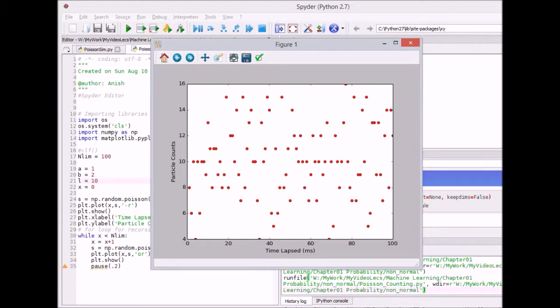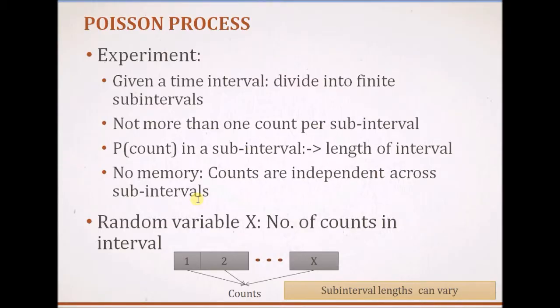To summarize, the Poisson process has three properties: first, there is very little chance of more than one count per sub-interval; second, the probability of each event per sub-interval — for example, the emission of one particle — is proportional to the length of that interval; and third, the probability of the count in each sub-interval is independent of the probabilities of counts or events from the other sub-intervals. Thanks for watching.